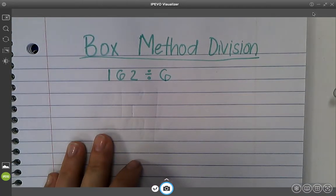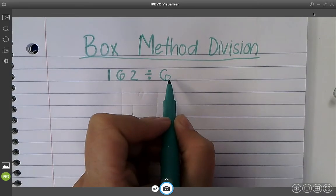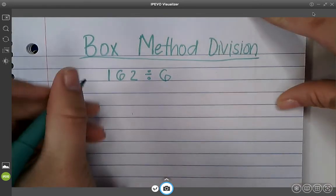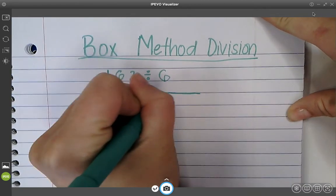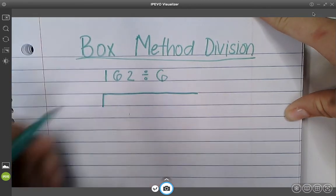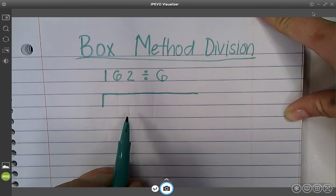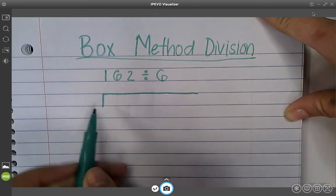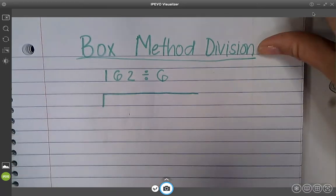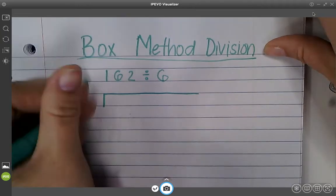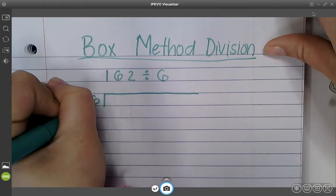Okay, so we look at this number. We know we're dividing by 6. So when we set up the problem, we're going to kind of draw a shape like this. Okay, it's almost like a crooked L. Sometimes it's called like the house, but it is telling us that we need to divide.